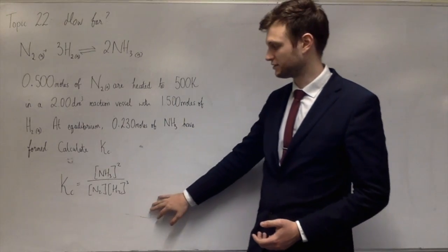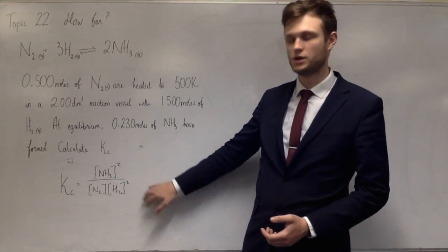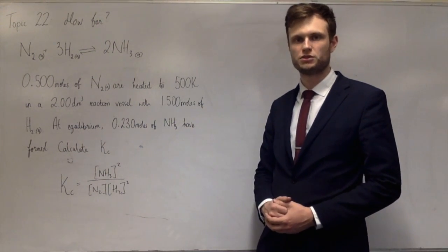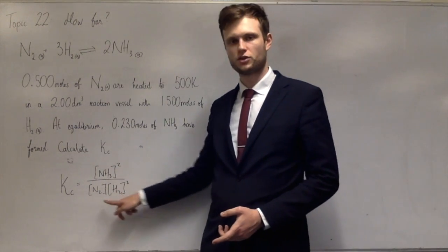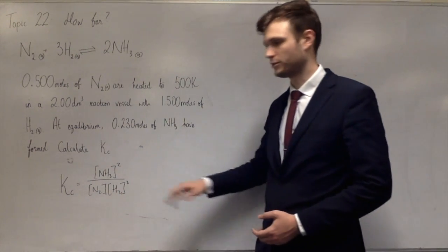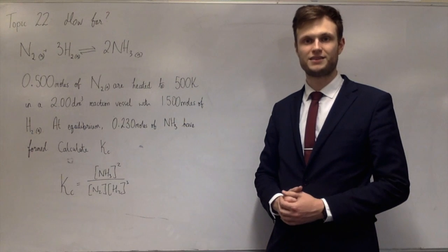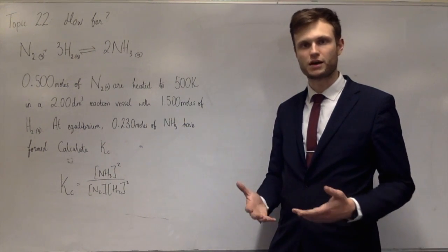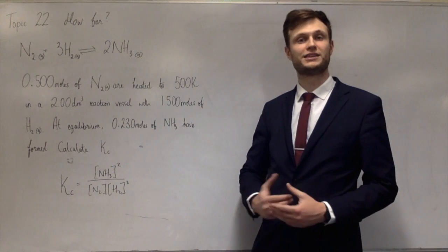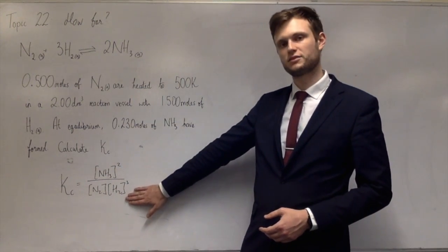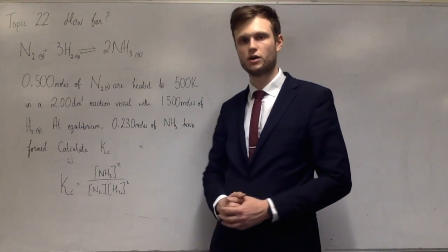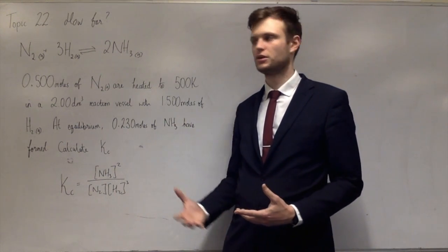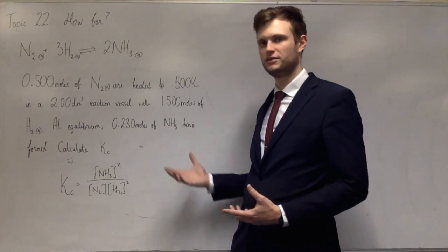We can work out the units: mol⁻² dm⁶. We need to calculate all of these concentrations and then put them into the equation to give KC. If KC equals one, there are equal amounts of products and reactants. If it's less than one, there are more reactants. If it's more than one, there are more products.